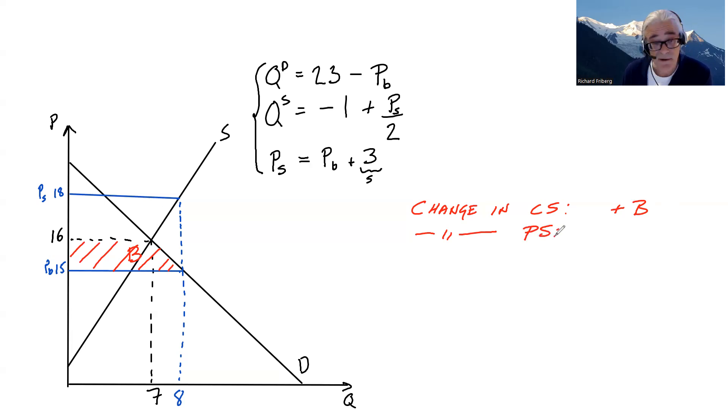Producers, on the other hand, they're also happy. Prices increase, quantities expand. As always, producer surplus given by difference between price and what suppliers would be willing to supply for. Supply curve, call this A.